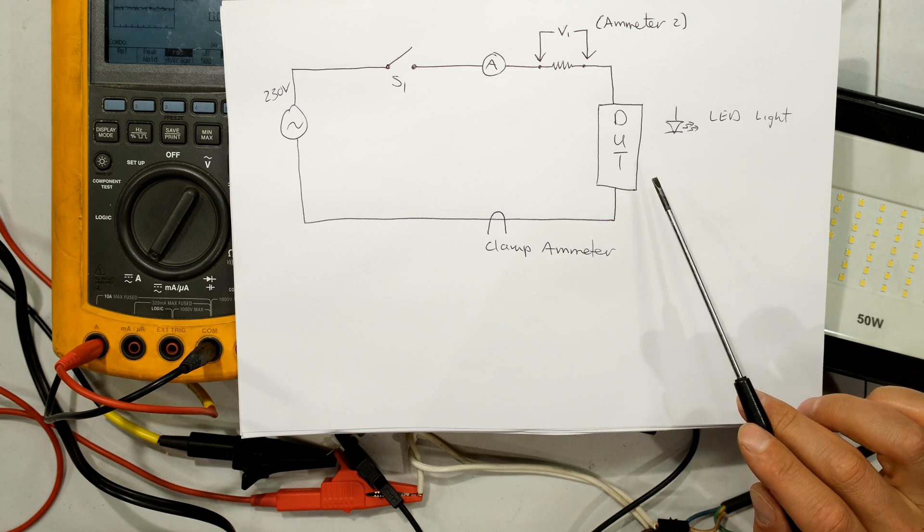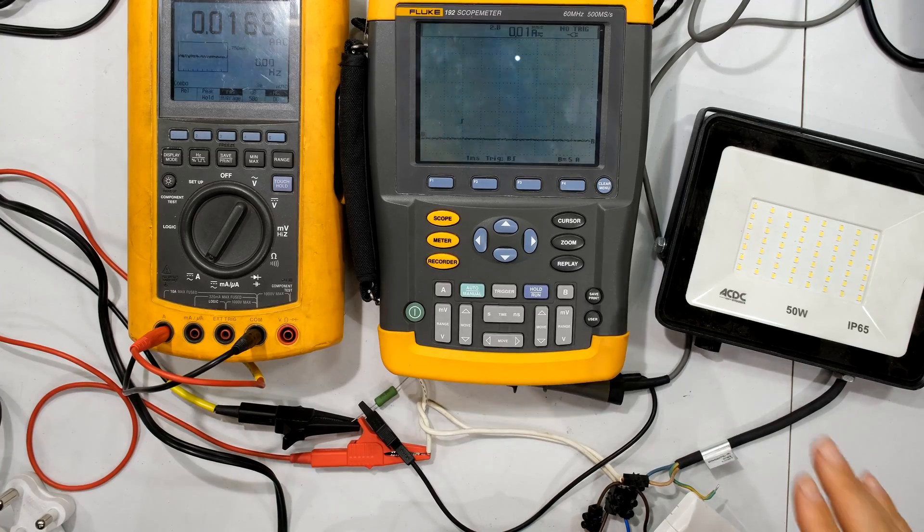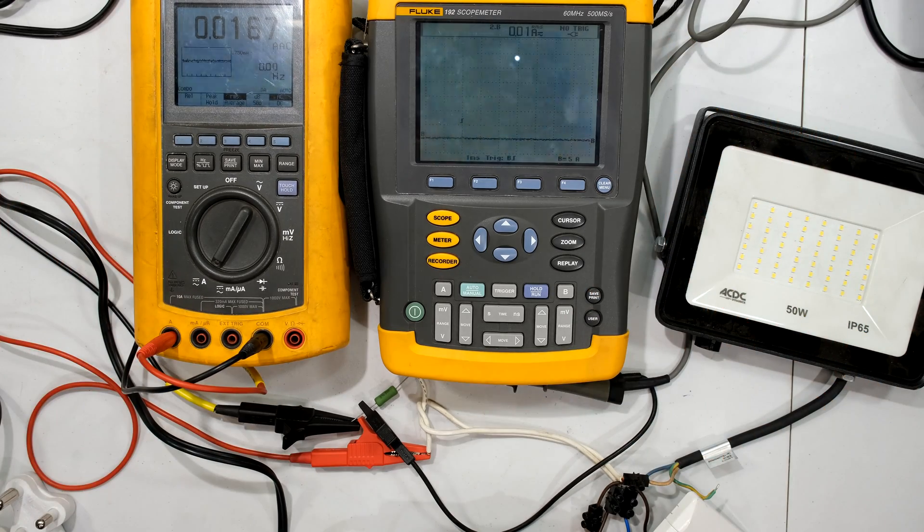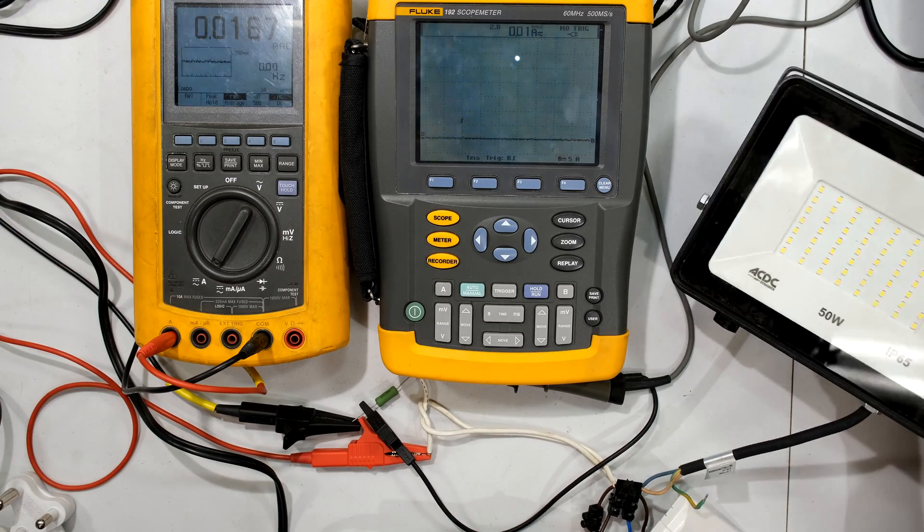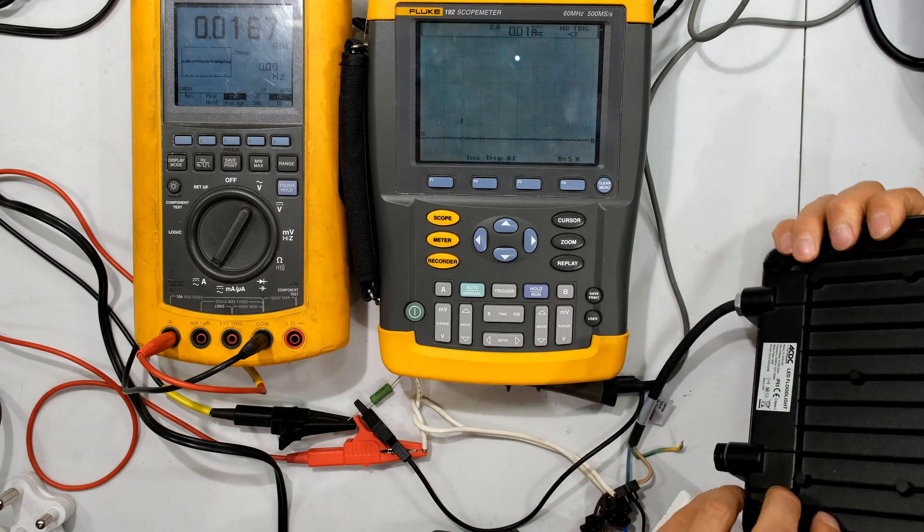In this case it's a 50 watt floodlight and I'll quickly show you the layout on the desk. Now it is a bit of a mess here on my desk mainly because I want to try and get the screens on the camera. What I have here is this AC DC branded 50 watt LED floodlight.